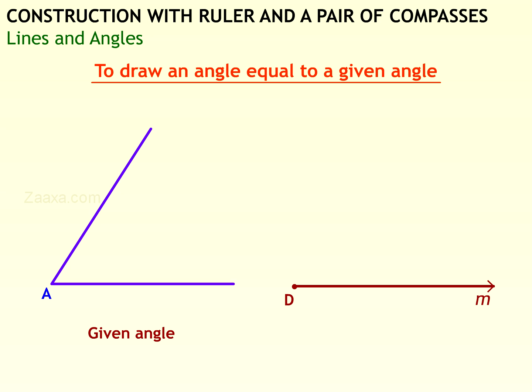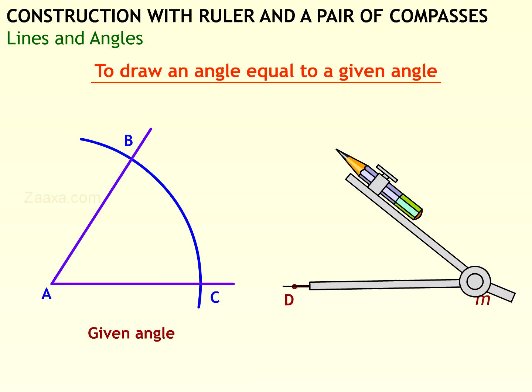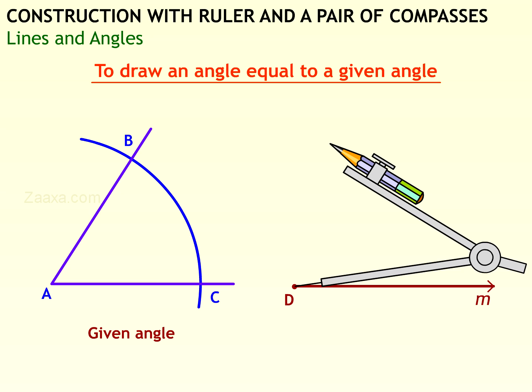Point D will be the vertex of the new angle. With A as center, draw an arc cutting the two arms of the given angle at C and B. Without changing the width of the compass,